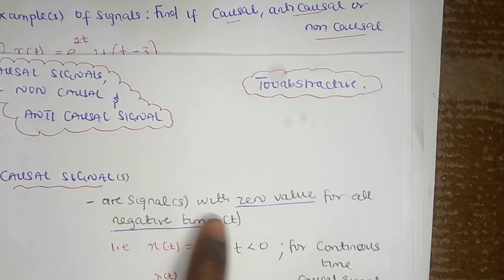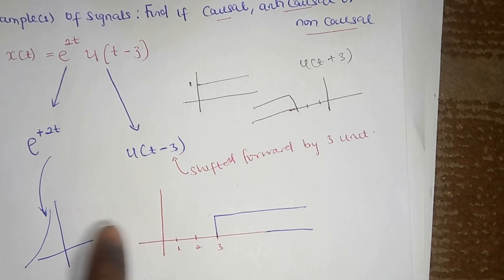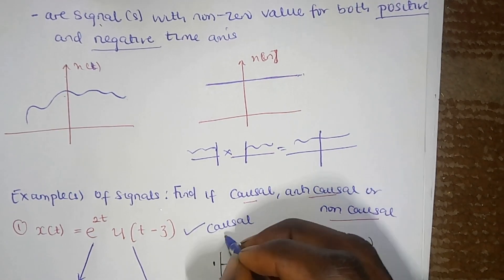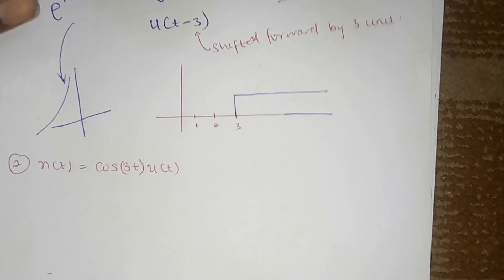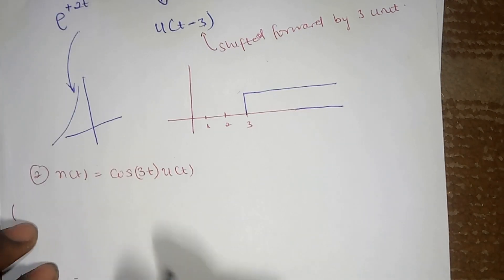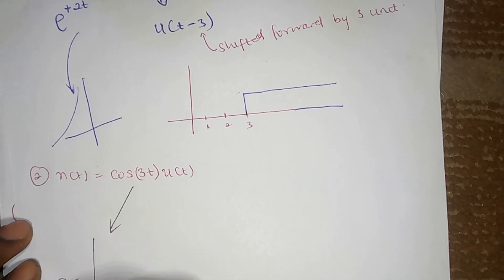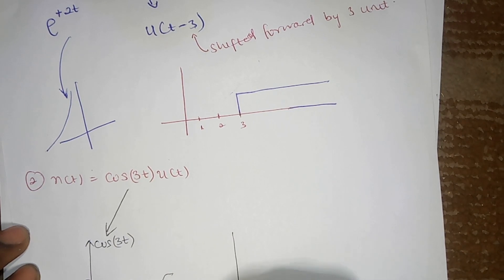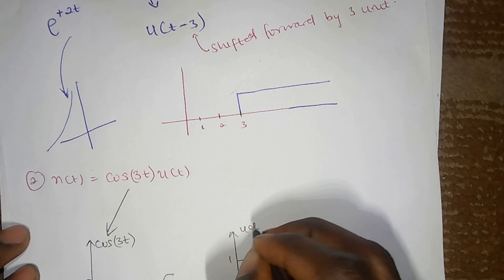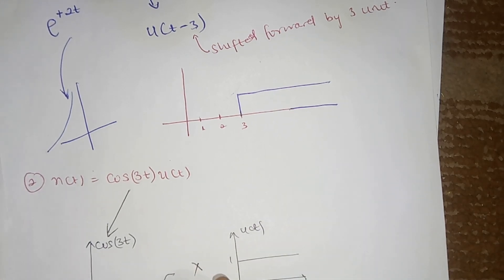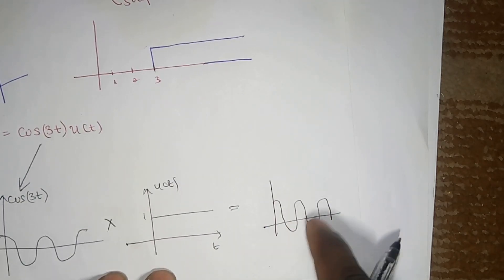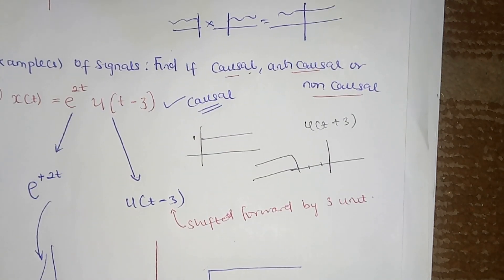A signal that exists only on the positive axis — meaning zero value on the negative axis — that's causal. Look at the definition of causal: a signal with zero value on the negative axis. So this signal is causal. Now the second example: cos(3t) is a sinusoidal signal that exists for both positive and negative axes, and u(t) is a signal with magnitude 1. If you mix these two signals together, the negative axis gets truncated. We only have value on the positive axis, which means this signal is also causal.